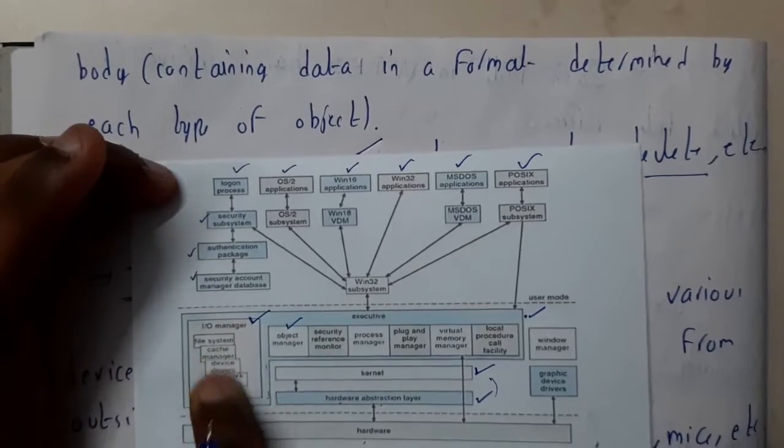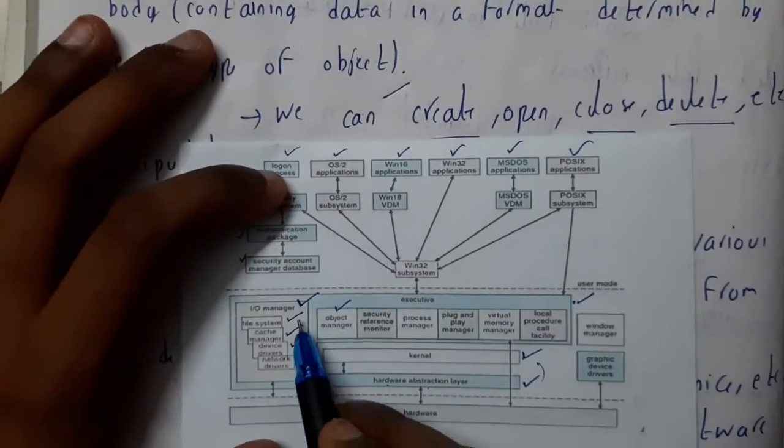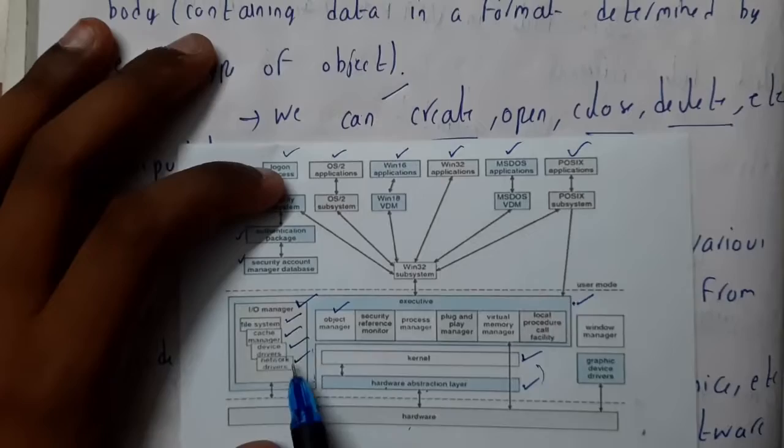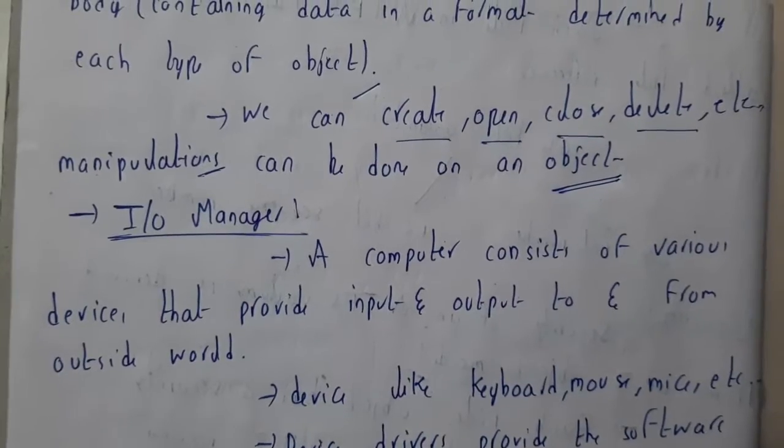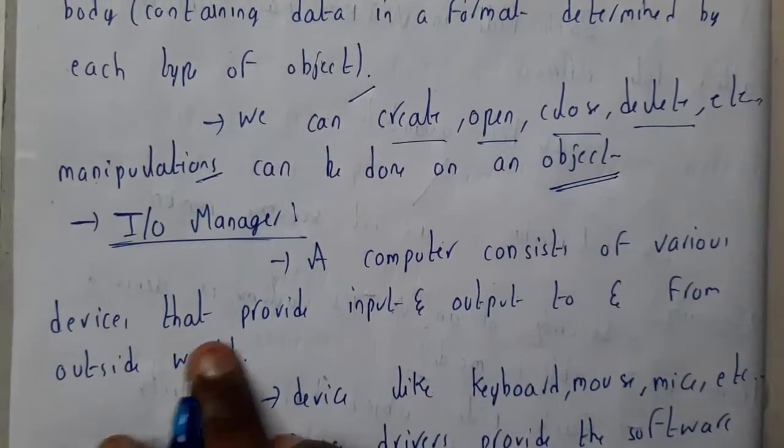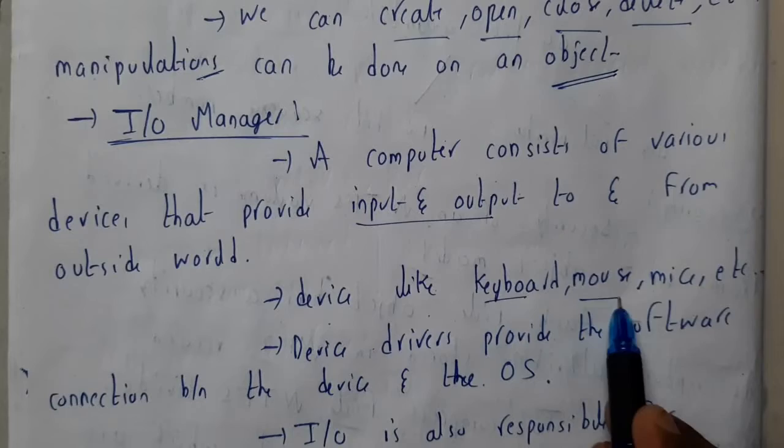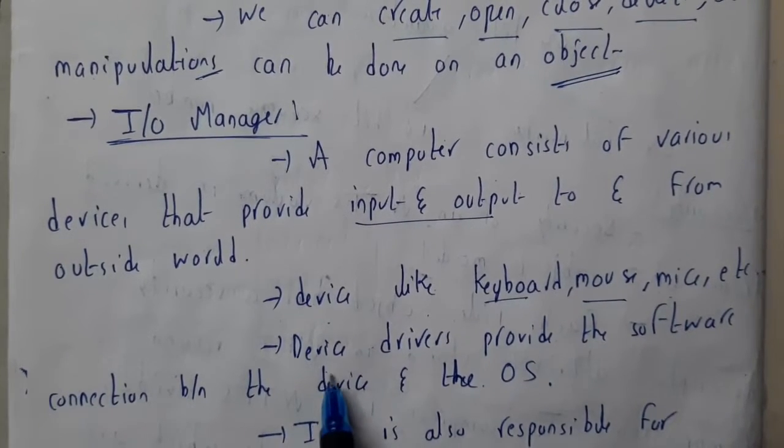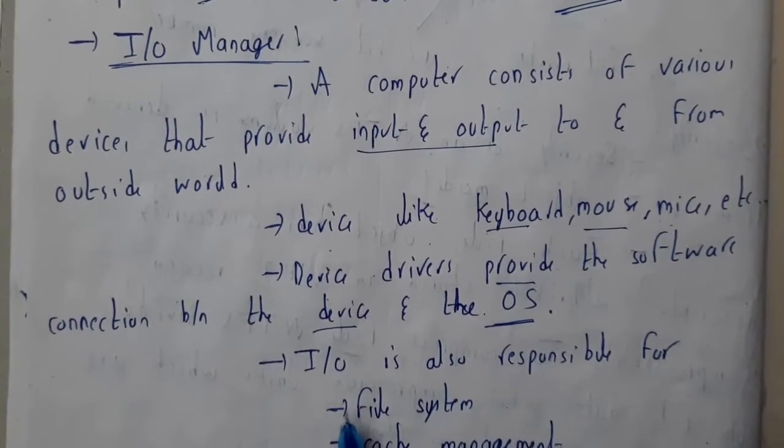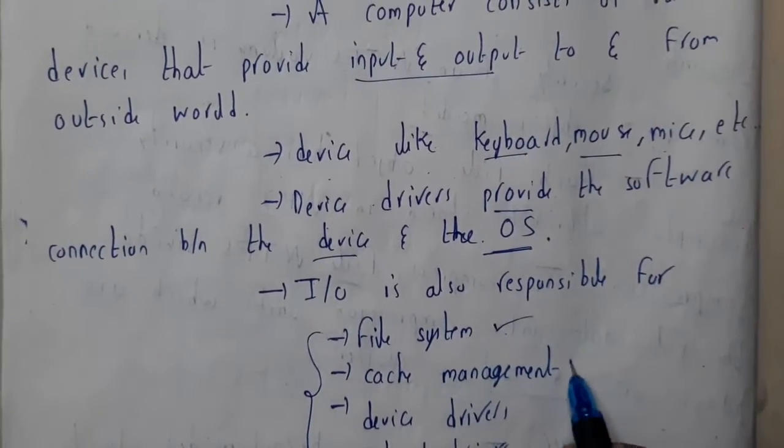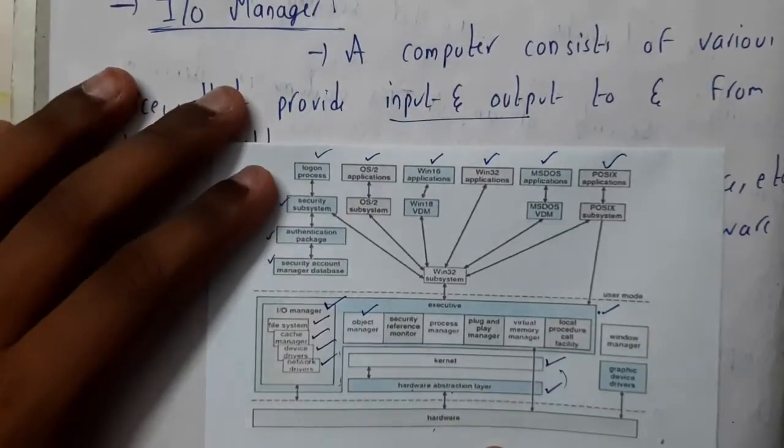Now let us go through I/O Manager. A computer consists of various devices that provide input and output, like keyboard, mouse, etc. Device drivers provide the software connection between the device and the operating system. I/O Manager is responsible for file system, cache memory, device drivers, and network drivers.